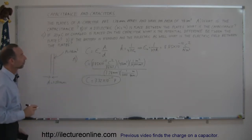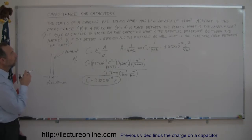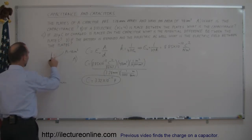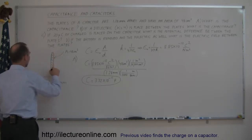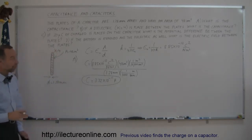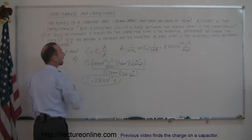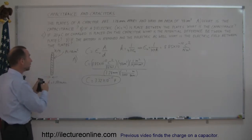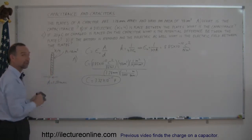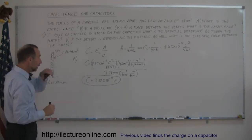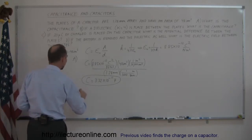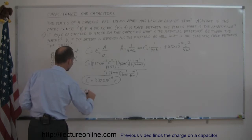Now for part B, we place a dielectric between the plates. The dielectric has dielectric constant K equals 4. Putting a dielectric in a capacitor increases the capacitance because it weakens the electric field between the plates. We must multiply the capacitance by K. So the capacitance now equals epsilon sub nought times K times A over D.